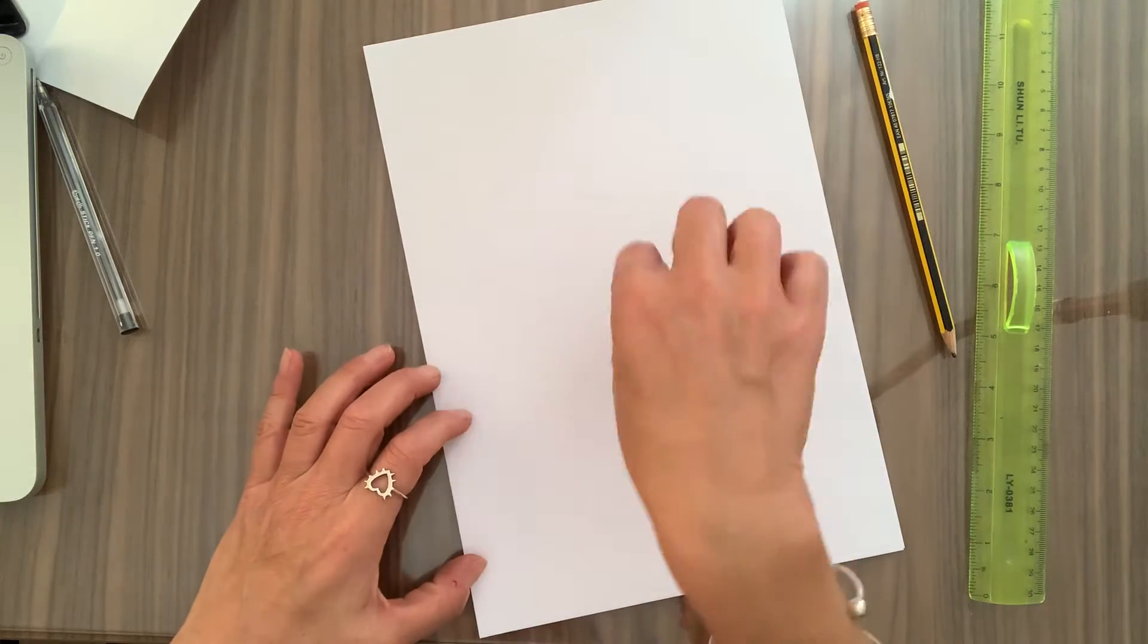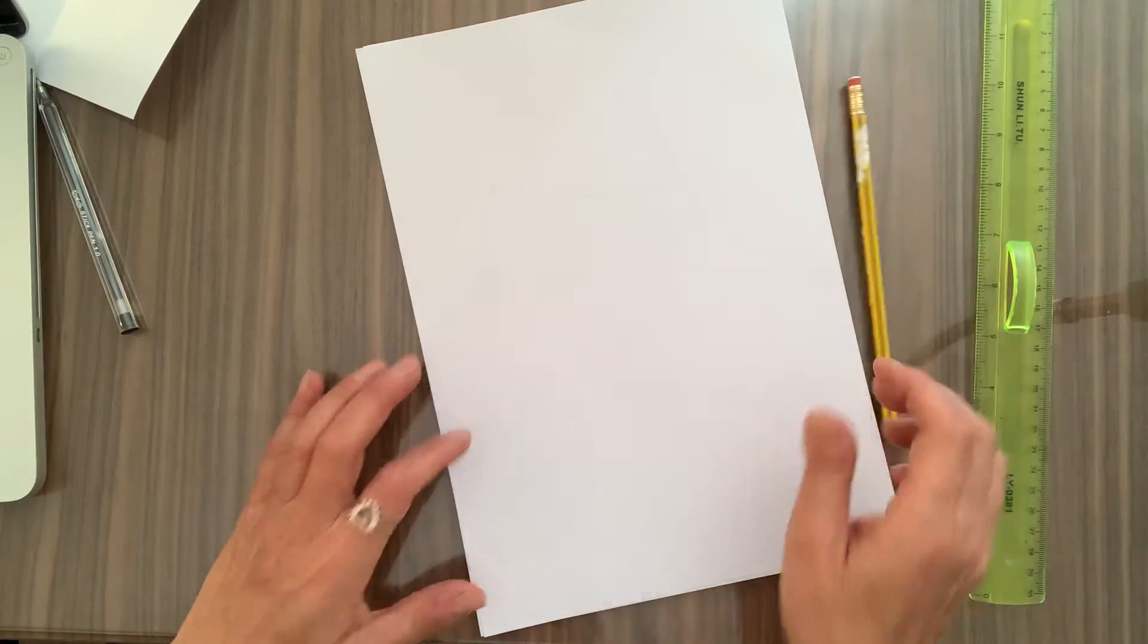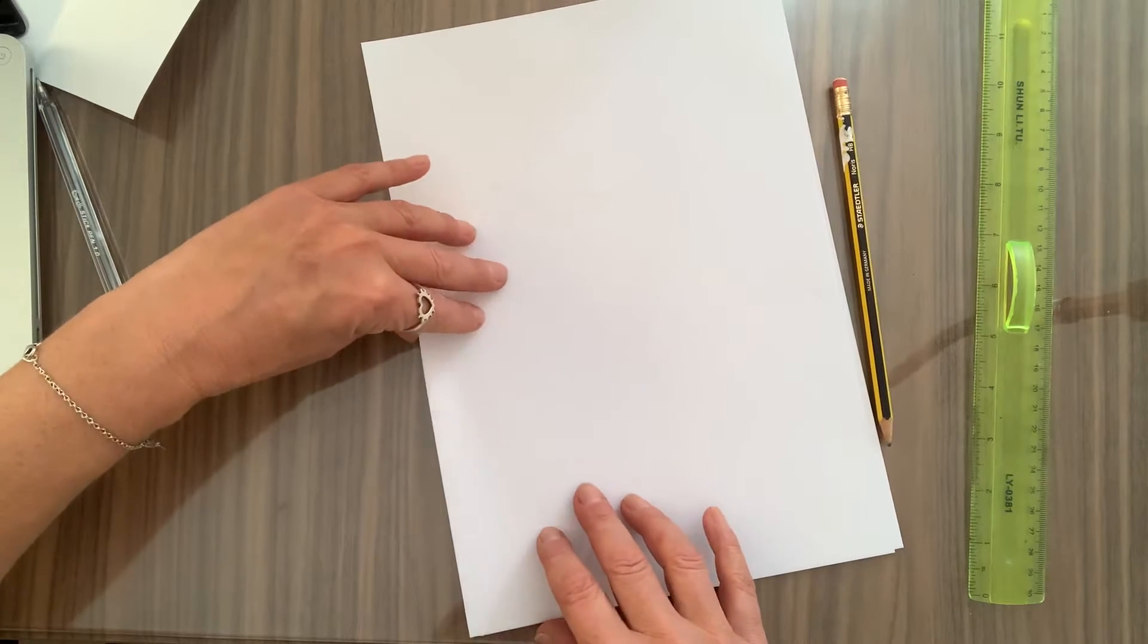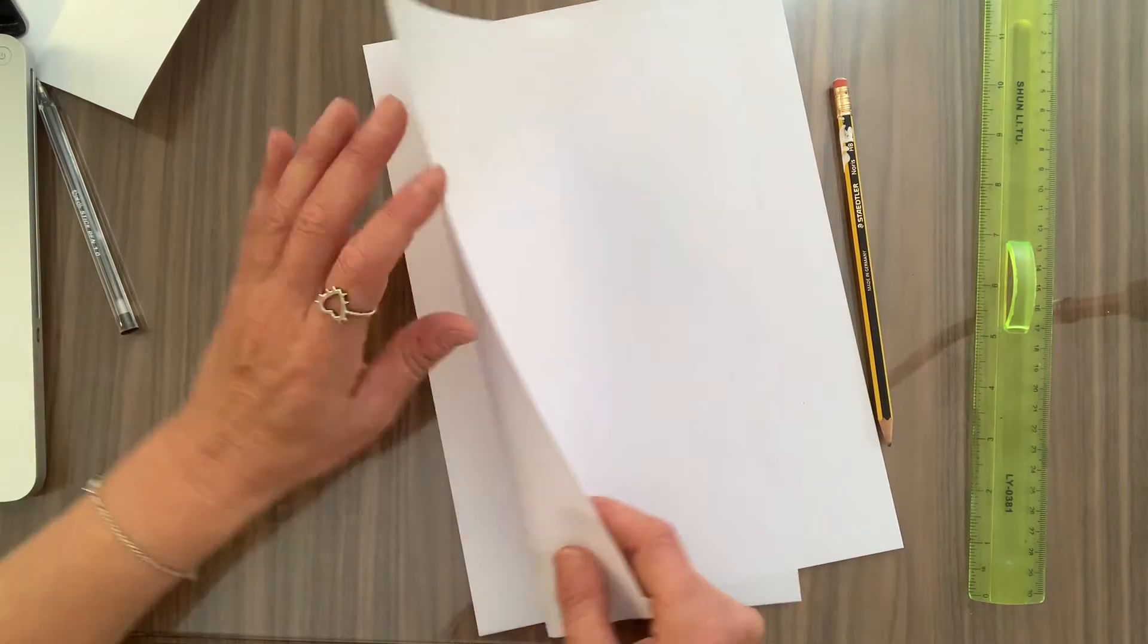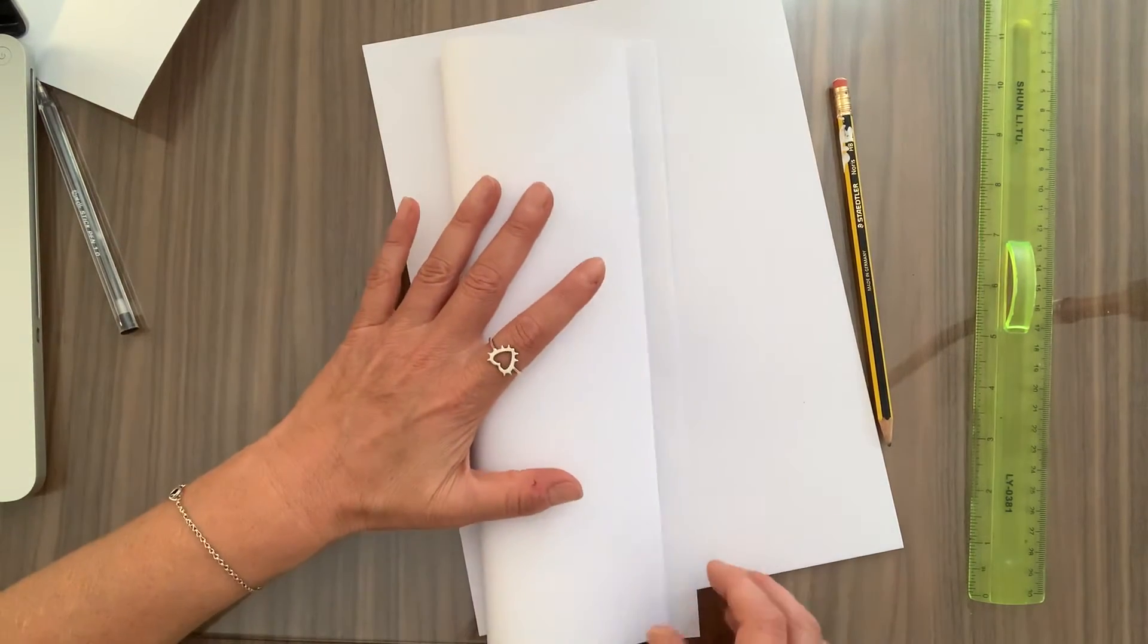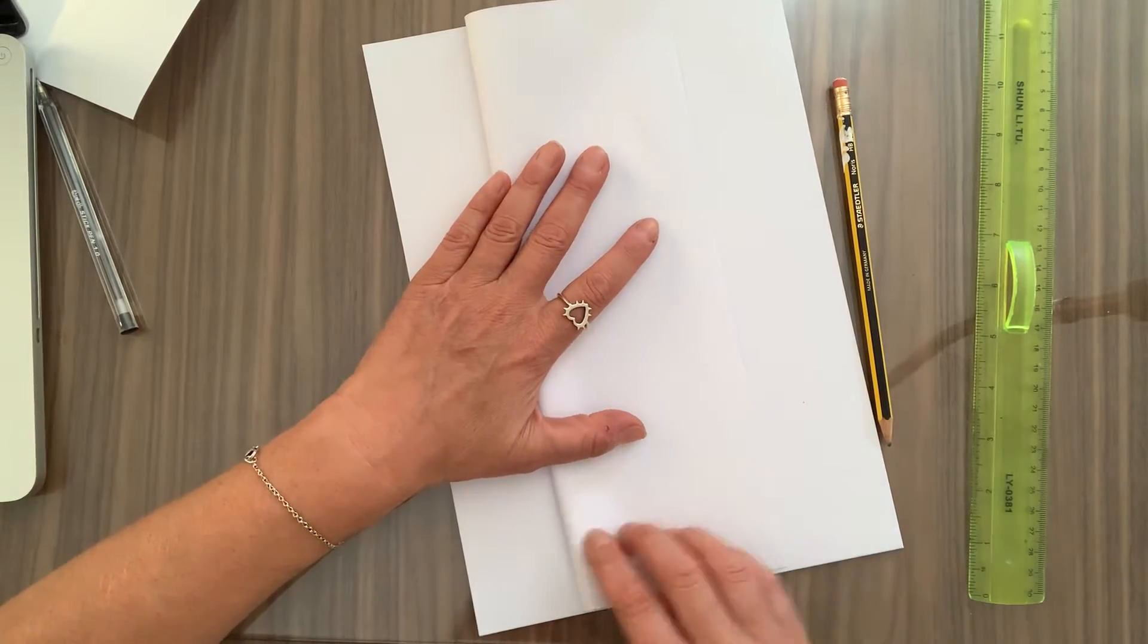You can just draw your squares if you want to, or else you can do it this way. So we need eight squares. These are going to end up being rectangles, but that's fine. So we're going to fold our paper in half.